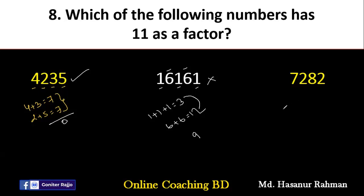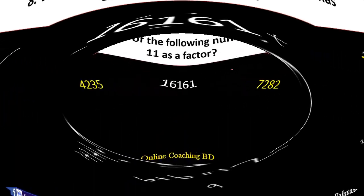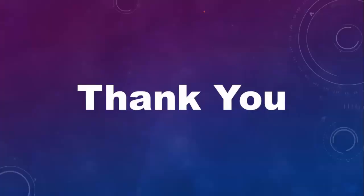Now 7282. Adding odd position digits: 7 plus 8 is 15. Adding even position digits: 2 plus 2 is 4. The difference between 15 and 4 is 11. Yes, 11 is a factor of 11, so we can say 11 is a factor of 7282. In this way we can solve this chapter. Thank you very much for attending today's class. See you soon in the next class. Until then, Allah Hafiz.